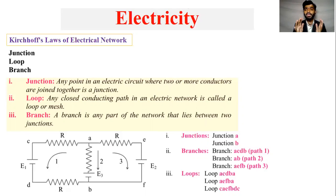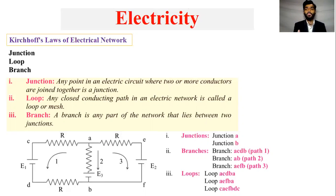This path — which means where current flows. In this path, where current flows, we have to define a loop. A loop is a closed path in an electrical network where current flows.